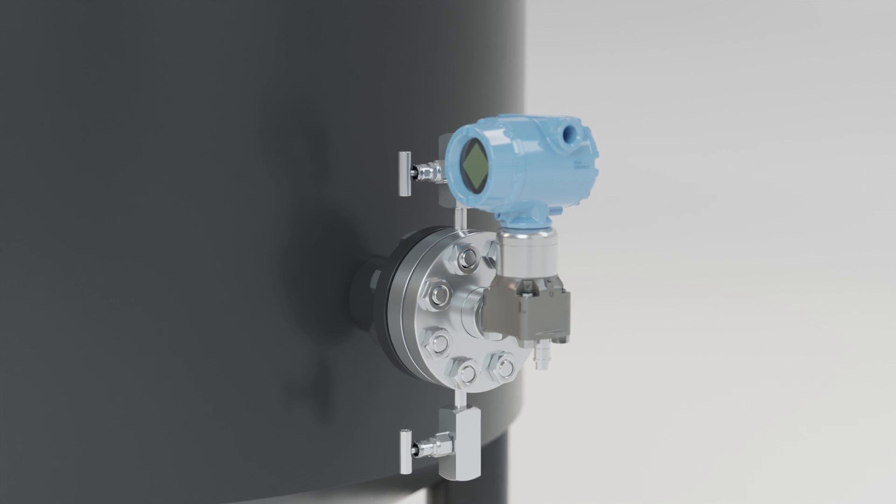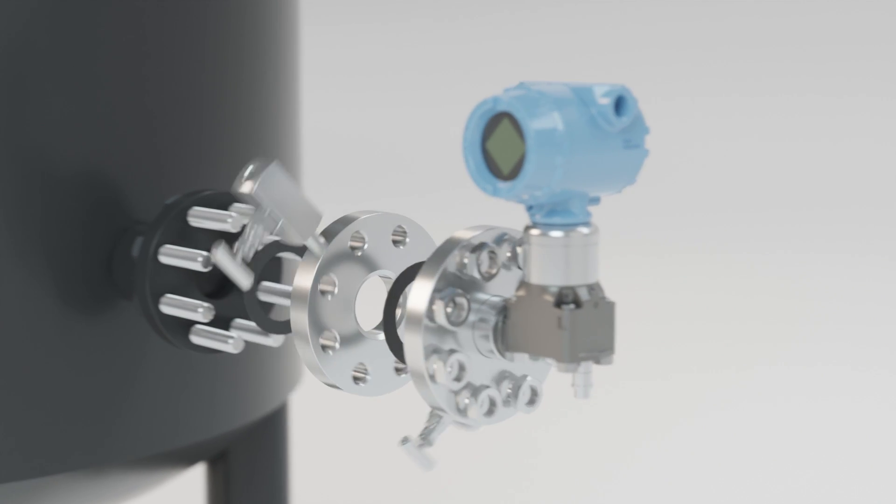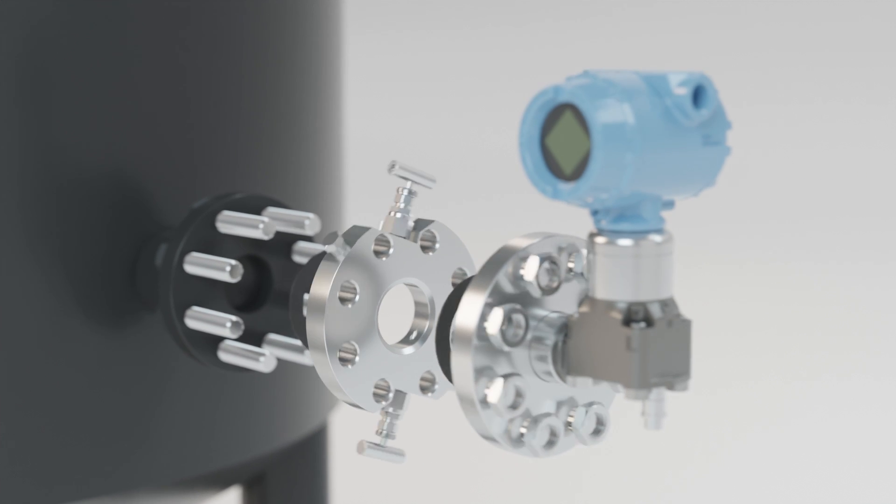Both flushing ring types provide a process-to-seal connection so you can maintain seals without disconnecting them from the process flanges.